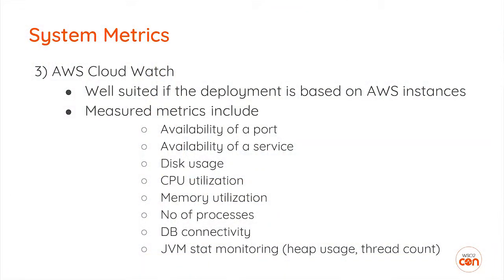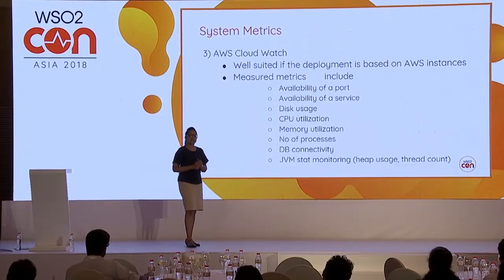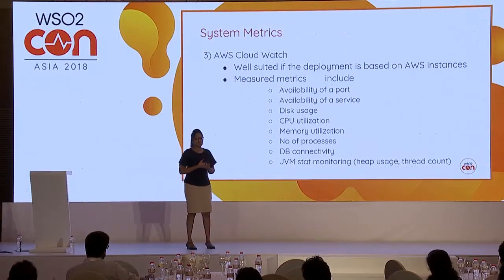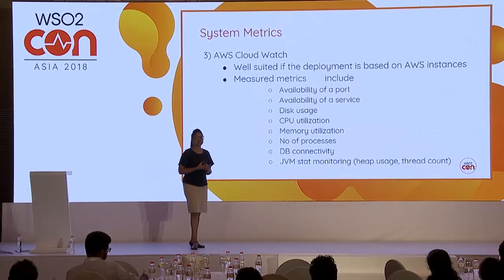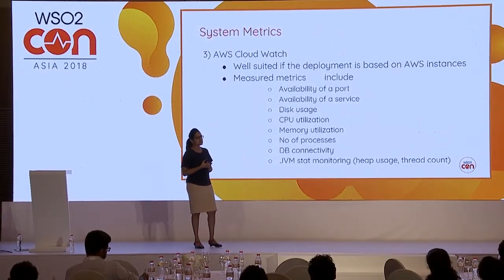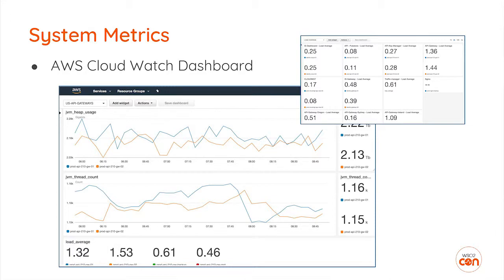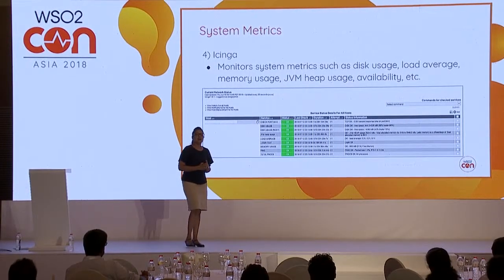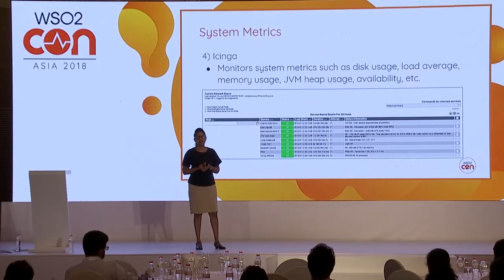The next tool is AWS CloudWatch, which we also use for our cloud deployments. It is well suited for AWS deployments and provides a reasonable set of information such as port availability, disk usage, memory usage, and so on — it's moreover suited for system metrics monitoring. Similarly, we can use Icinga to monitor system metrics, which also provides load average, disk usage, memory usage, and so on.